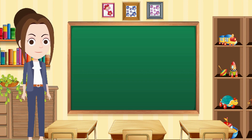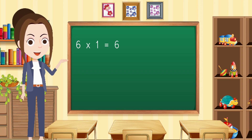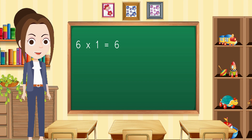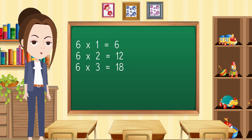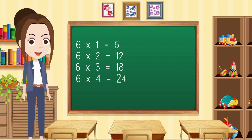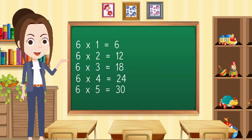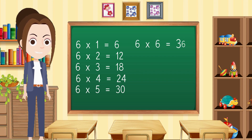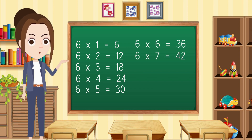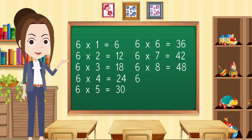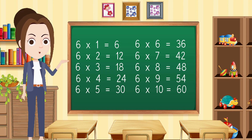Now repeat. 6 ones are 6. 6 twos are 12. 6 threes are 18. 6 fours are 24. 6 fives are 30. 6 sixes are 36. 6 sevens are 42. 6 eights are 48. 6 nines are 54. 6 tens are 60.